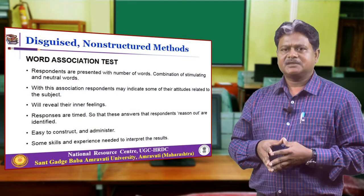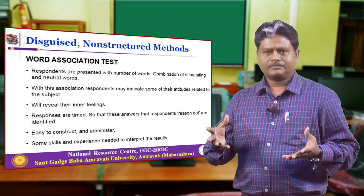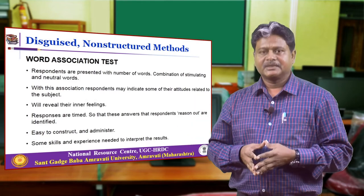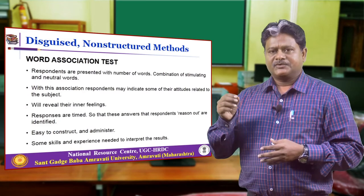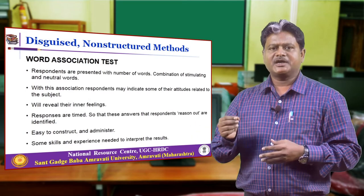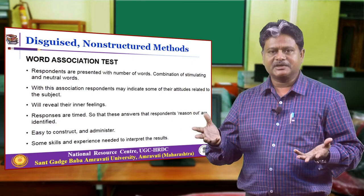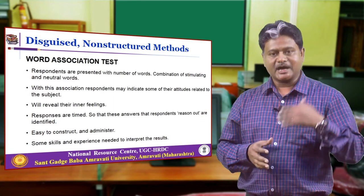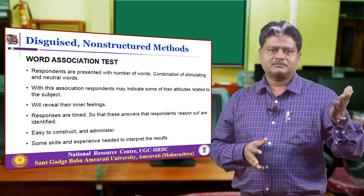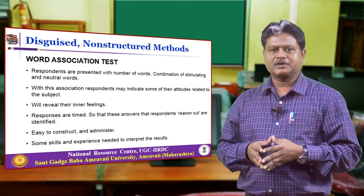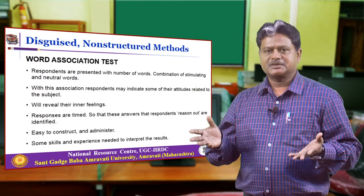Now let us move on to disguised and non-structured methods. We will study some tests commonly used for this purpose, starting with the word association test. Respondents are presented with a number of words — a combination of stimulating and neutral words. Respondents are asked to give the first word that comes to their mind and should not be asked to write the answer. This association may reveal some of their attitudes related to the subject and their inner feelings. Responses have to be timed. This method has the advantage of being easy to construct and administer, but skill and experience are needed to interpret the results.